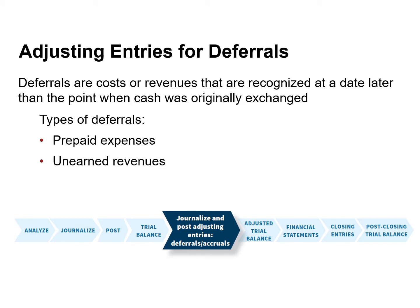Companies make adjusting entries for deferred expenses, also known as prepaid expenses, to record the portion that was incurred during the period, and for deferred revenues, also referred to as unearned revenue, to record services performed during the period.